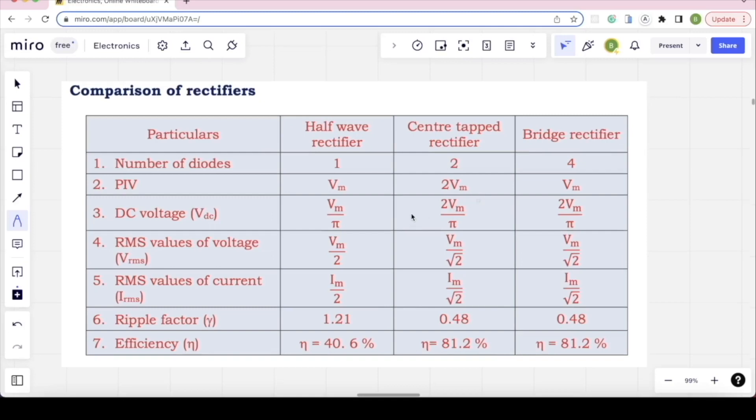Comparison of rectifiers: half-wave and full-wave. Number of diodes: half-wave only one diode, center tap two diodes, bridge rectifier four diodes. Peak inverse voltage: this is Vm for half-wave, 2Vm for center tap, Vm for bridge rectifier. VDC: Vm by Pi for half-wave, 2Vm by Pi for full-wave. Vrms: Vm by 2 for half-wave, Vm by root 2 for full-wave. Current is similar: Im by 2 and Im by root 2. These are important direct questions. Ripple factor: half-wave rectifier 1.21, full-wave 0.48. Efficiency: half-wave 40.6%, full-wave 81.2%.